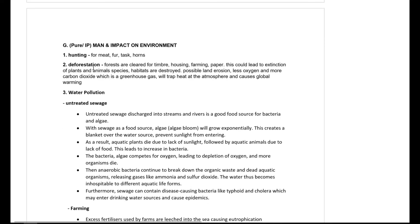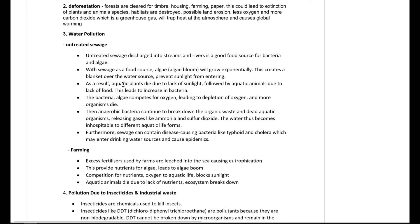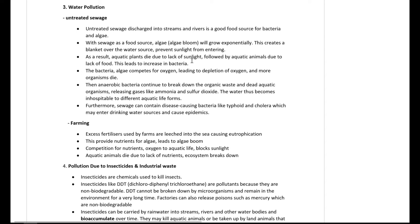Impacts on the environment include hunting, deforestation, water pollution, and untreated sewage. Untreated sewage provides nutrients for the growth of bacteria and algae. When dumped into a nearby lake or pond, there is a huge growth of algae — called an algae bloom — which forms a layer over the water, preventing sunlight from entering, causing aquatic plants to die, followed by aquatic animals.